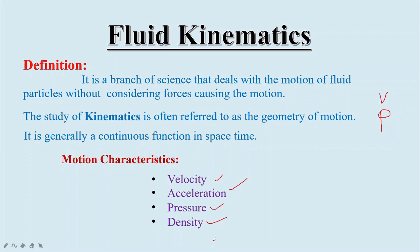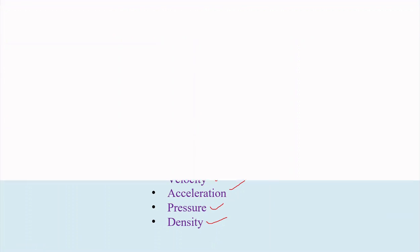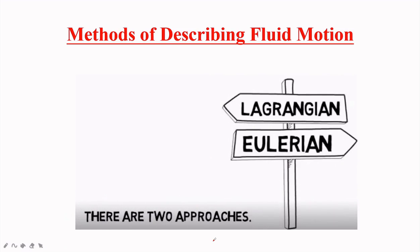To determine velocity and acceleration, we have two approaches in this chapter — the methods of describing fluid motions are of two types. They are the Lagrangian method and the Eulerian method. Now we will see what the Lagrangian method and Eulerian method are in detail.